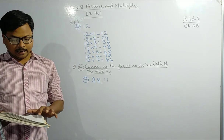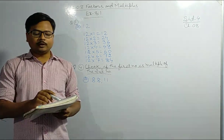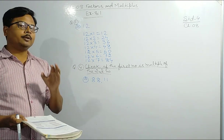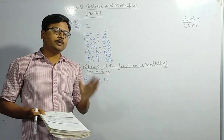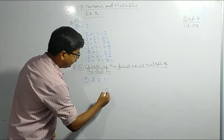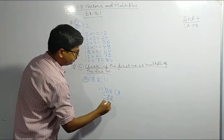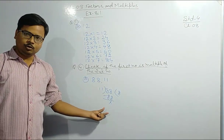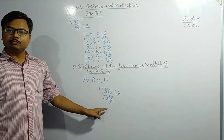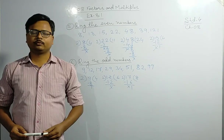Questions two and three — that is, say true or false and fill in the blanks — you have to do on your own. Now come to question number four: check if the first number is a multiple of the second number. To do this, divide 88 by 11. The answer has remainder zero. If the remainder is zero, the first number is a multiple of the second. If the remainder is not zero, it is not a multiple.